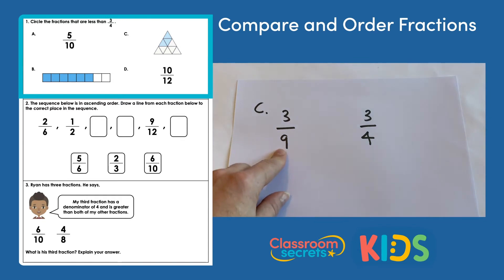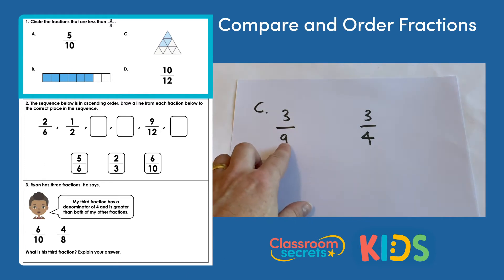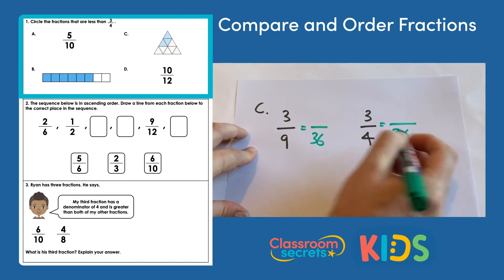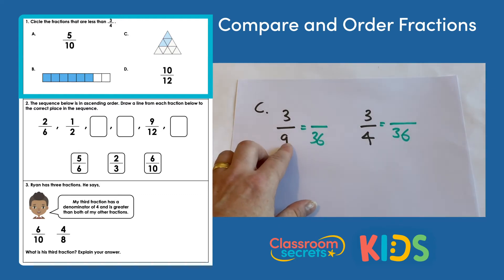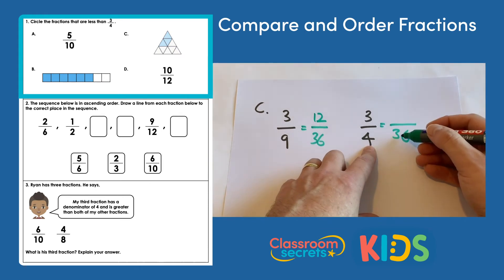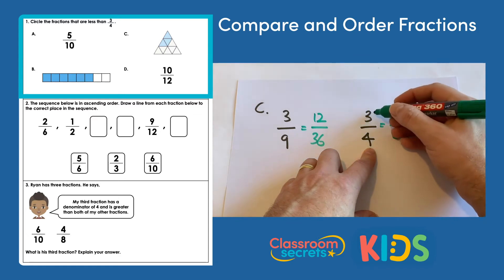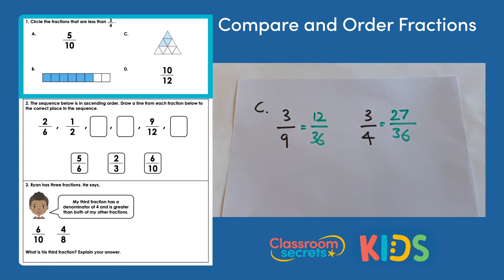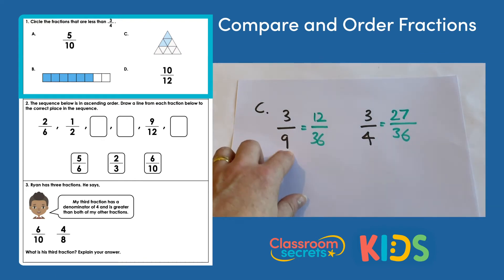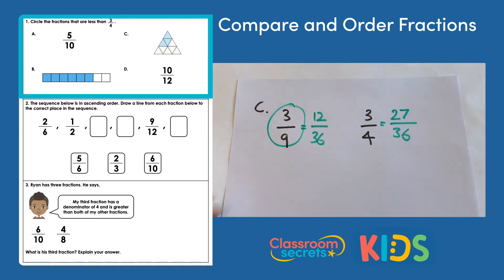For C we have three ninths, and we're going to compare that to three quarters. The lowest common multiple of nine and four is 36, so we make both fractions thirty-sixths. We multiply nine by four to make thirty-six, and the numerator three by four to get twelve thirty-sixths. For three quarters, we multiply four by nine to make thirty-six, and the numerator three by nine gives twenty-seven. So we have twelve thirty-sixths versus twenty-seven thirty-sixths — three ninths is less than three quarters, so C is another one we can circle.